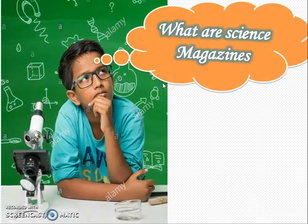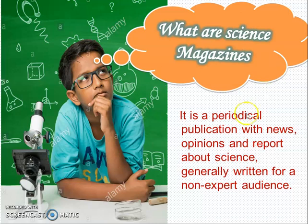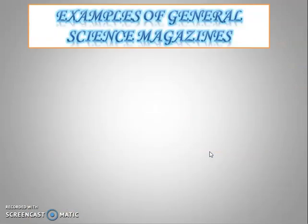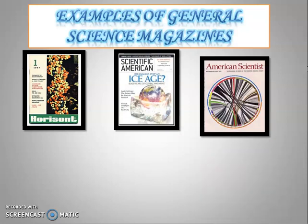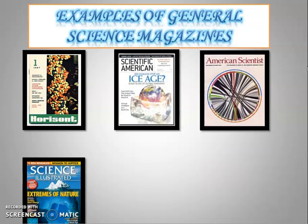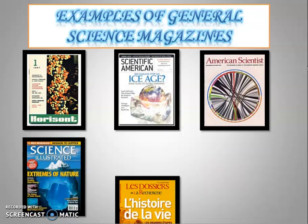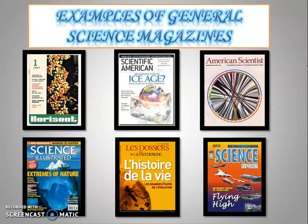Now, what are science magazines? A science magazine is a periodical publication with news, opinions, and reports about science, generally written for a non-expert audience. Examples of science magazines include Horizon, Scientific American, American Scientist, Science Illustrated, and Les Dossiers de la Science.